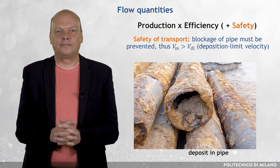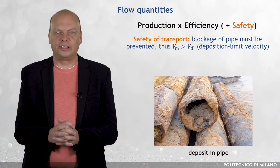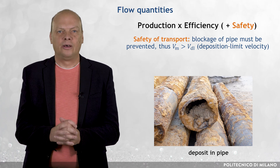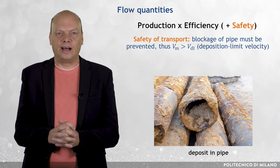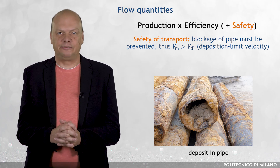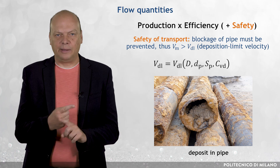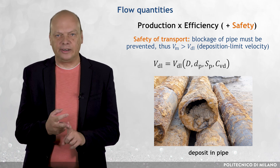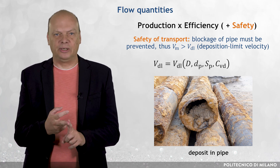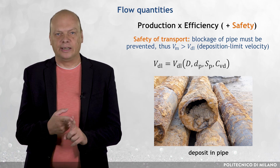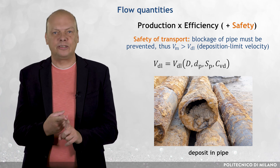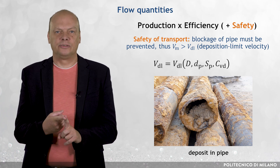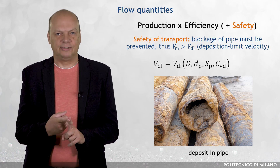This velocity occurs in all types of settling slurry flows, although its value differs significantly with the pipe size D, the particle size Dp, in addition to the relative density Sp, and the delivered concentration Cvd.